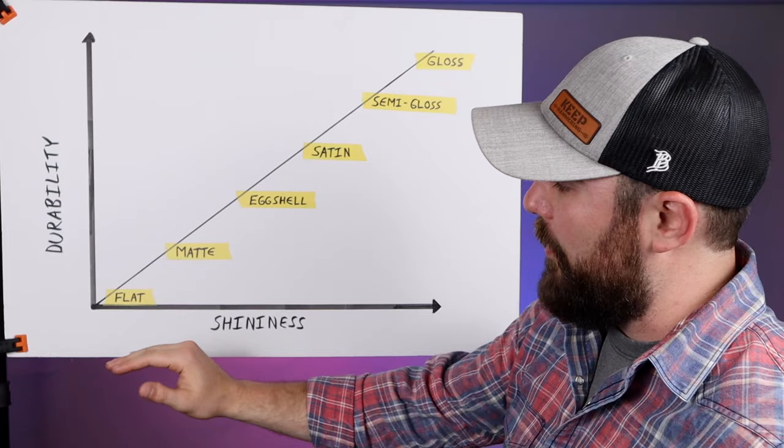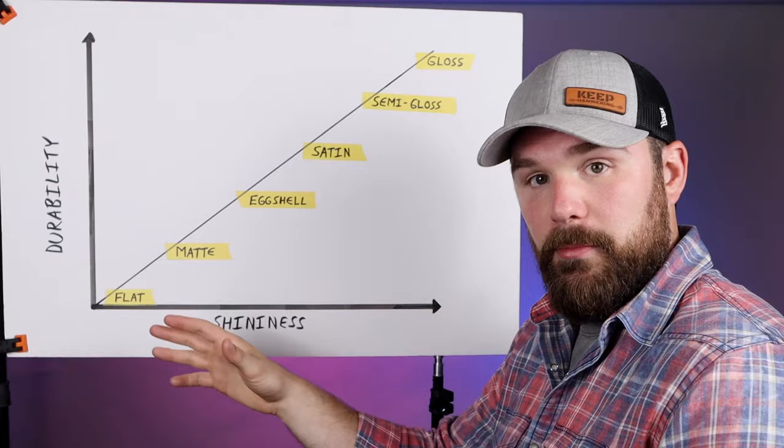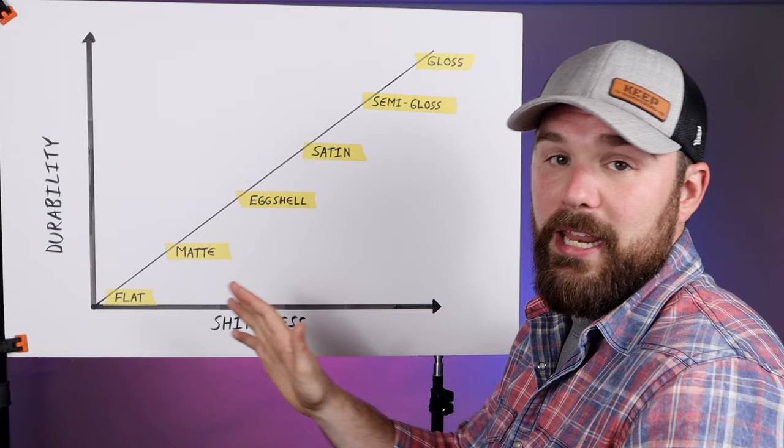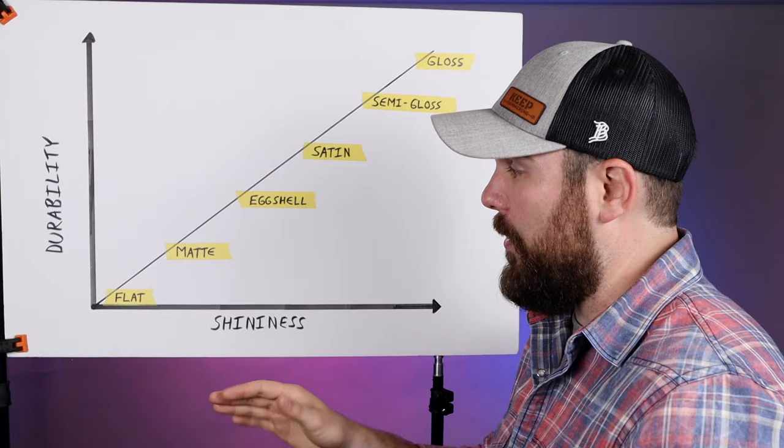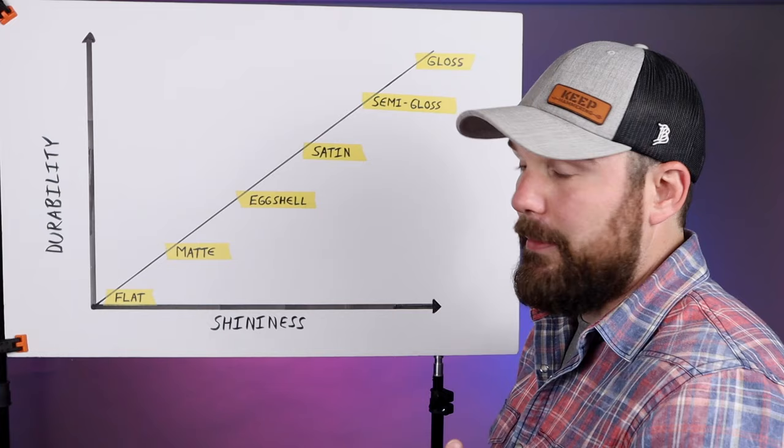You might ask why you would use a flat paint because it's not very durable. However, the less sheen you have in a paint, the more it hides imperfections in whatever surface you're coating. So most of the time in a residential application, flat paint will go on a ceiling—a family room ceiling, bedroom ceiling, kitchen ceiling, any of those places because a lot of times the finish quality in a ceiling is not very good.